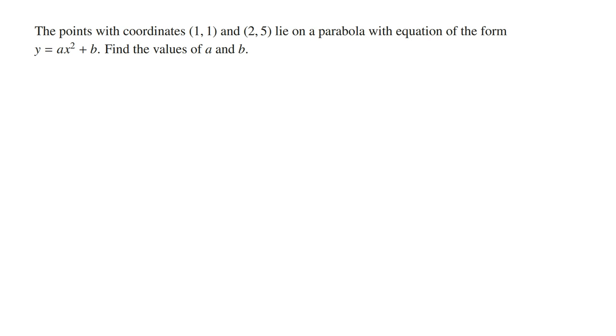Hey guys, in this video I'm going to go through an example of finding the equation of a parabola given that we have two points. Reading the question, we've got the points with coordinates (1,1) and (2,5) lie on a parabola with equation of the form y = ax² + b. Find the values of a and b.